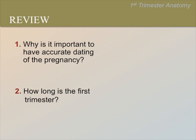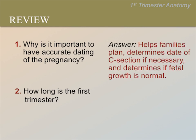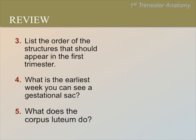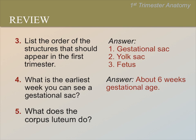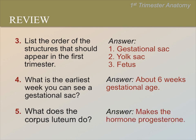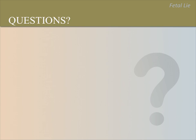Here are questions for review. Why is it important to have accurate dating of the pregnancy? The answer is that it helps families plan for the birth, helps healthcare workers determine the date of a c-section if necessary, and helps to measure fetal growth. How long is the first trimester? The first trimester includes a period of time in early pregnancy until the end of the 12th week. List the order of the pregnancy structures that should appear in the first trimester on ultrasound: gestational sac, yolk sac, and then a fetus. What is the earliest week you can see a gestational sac? About 6 weeks gestational age. What does the corpus luteum do? It produces the hormone progesterone. Thank you for your attention and interest in learning pregnancy ultrasound. Please pause this video now to ask your instructor any questions about this course.